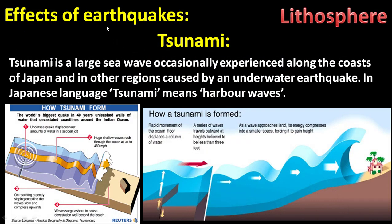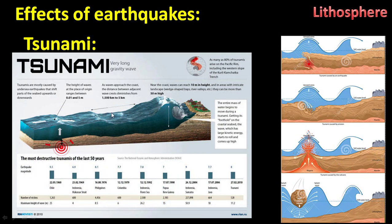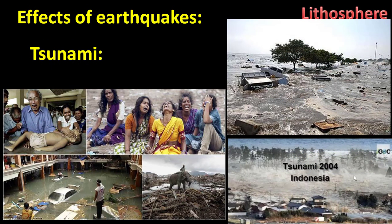One major effect of earthquakes is the tsunami. A tsunami is a large sea wave occasionally experienced along the coasts of Japan and other regions, caused by an underwater earthquake. In the Japanese language, tsunami means 'harbor waves.' Some pictures show how a tsunami happens. The 2004 tsunami is a key example of how severely it caused damage along nearby seashores.